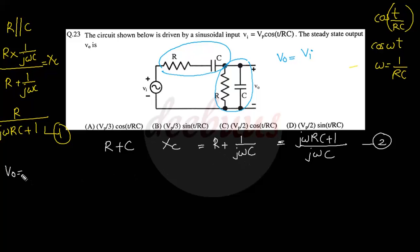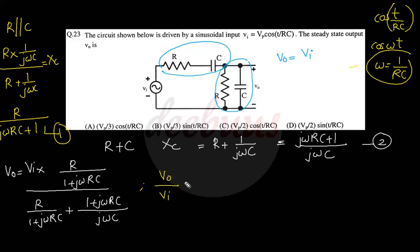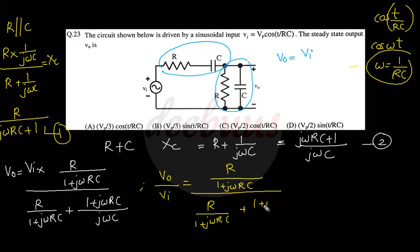V₀ equals vi × [R/(1 + jωRC)] divided by total impedance, which is [R/(1 + jωRC)] + [(1 + jωRC)/jωC]. Taking vi to the left-hand side, v₀/vi equals R/(1 + jωRC) divided by [R/(1 + jωRC) + (1 + jωRC)/jωRC].